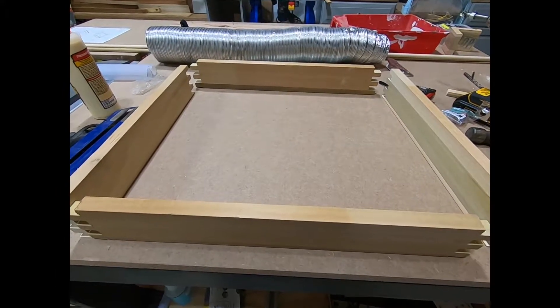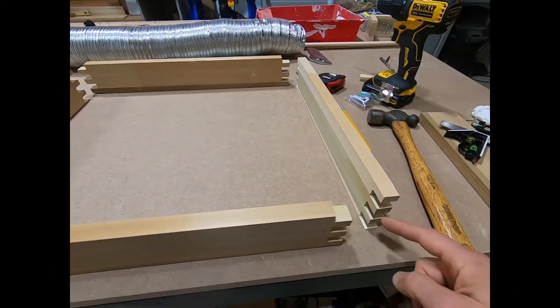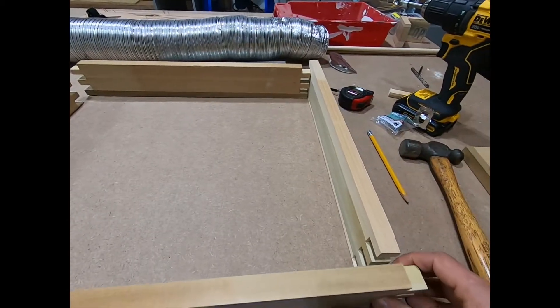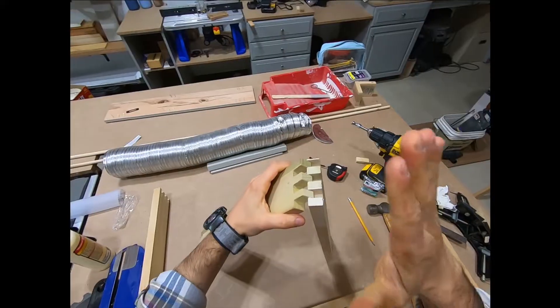You can also miter those angles. You can just butt the two pieces and screw them in this way.